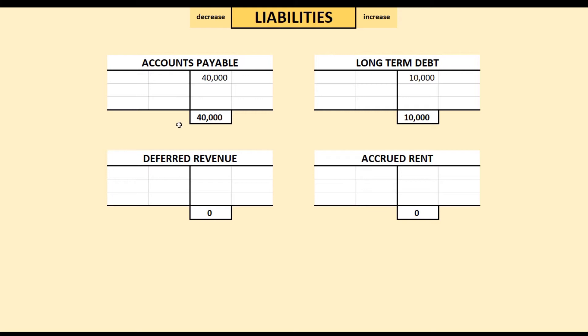What kind of liability is it? It's not money we owe to our suppliers, and it's not long-term debt. This is more short-term — we're going to do this within 60 to 90 days. It's not accrued rent either. This is what we call deferred revenue. It's going to be revenue — it's going to be a sale once we deliver it — but it is not revenue yet. We're going to put the $3,500 here to represent the liability we have to deliver the widgets for which we have already received payment. This is how we account for this transaction.